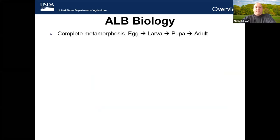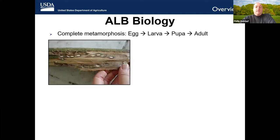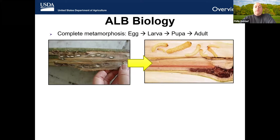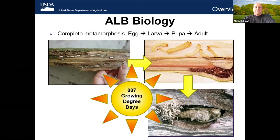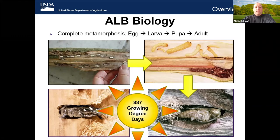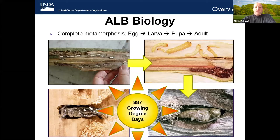The ALB lifecycle goes through complete metamorphosis, meaning the insect passes through distinct egg, larval, pupal, and adult stages, and the larva does not resemble the adult. The whole process takes approximately 887 growing degree days. Growing degree days are not the same thing as our normal 24-hour days and are governed by temperature. In warmer climates, like the South Carolina low country, the lifecycle can be accelerated when compared to cooler climates.